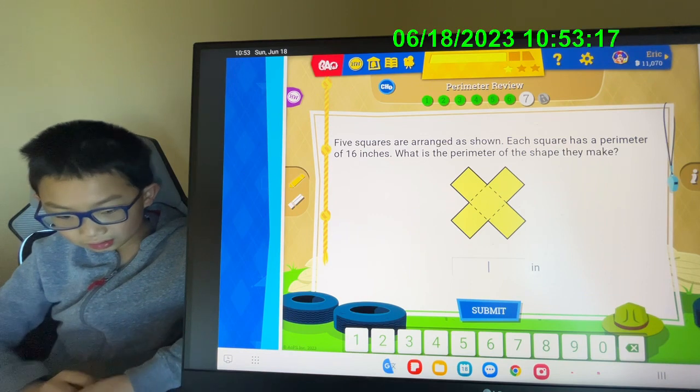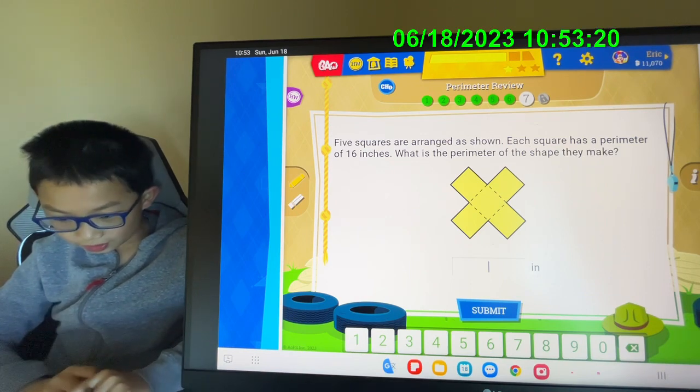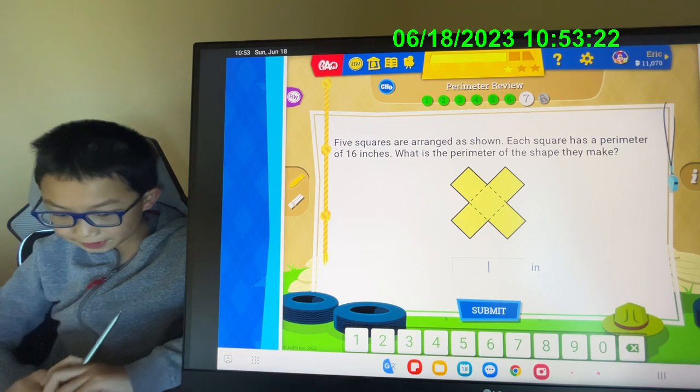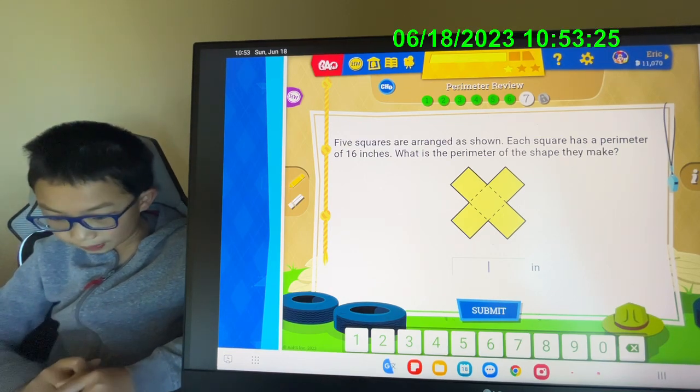Please read the question. Five squares are arranged as shown. Each square has a perimeter of 16 inches. What is the perimeter of the shape they make?